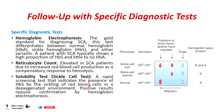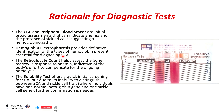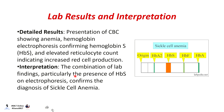Positive solubility test results require confirmation by hemoglobin electrophoresis. The CBC and peripheral blood smear are initial blood assessments that can indicate anemia and presence of sickle cells. Hemoglobin electrophoresis provides definitive identification of the type of hemoglobin present. Reticulocyte count helps assess the bone marrow's response to anemia, and the solubility test offers a quick initial screening for sickle cell anemia.